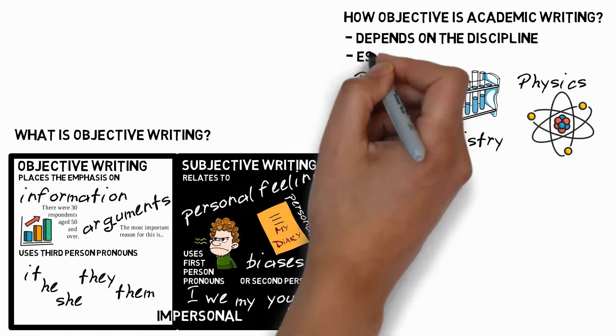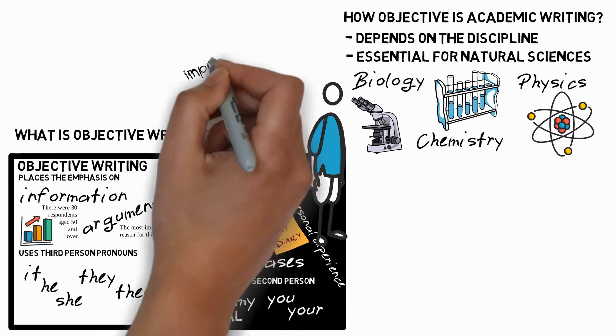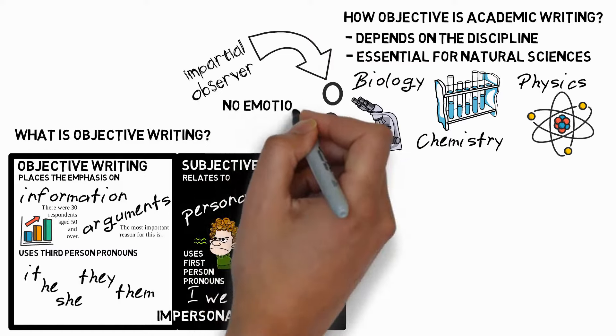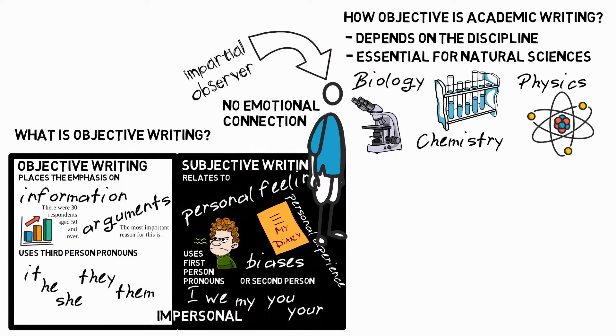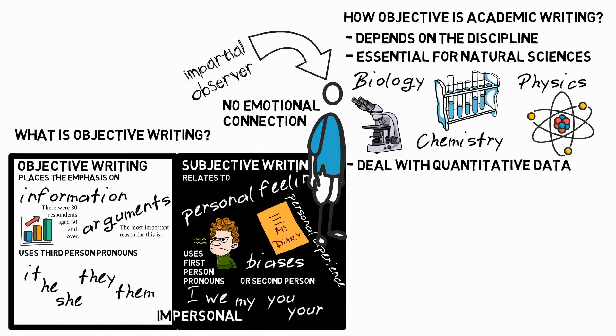If we're talking about natural sciences, such as biology, chemistry, or physics, objective writing is essential. For these subjects, the writer is seen as an impartial observer with no emotional connection to what they're writing about. It's easy to be objective for these subjects because they deal with quantitative data, in other words, numbers.